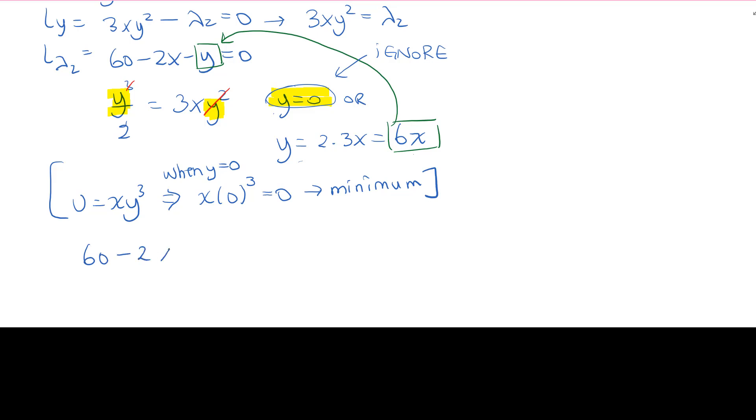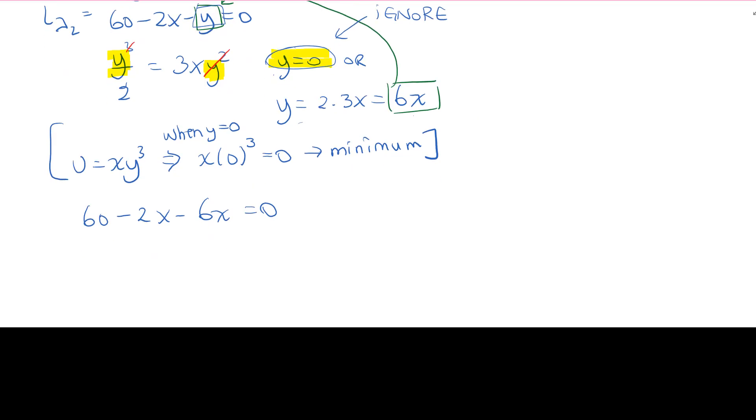Moving back on to solving our step number 2 problem. We are going to plug in the 6x for the y right here and solve for x. We get 60 equals to 8x now. Divide both sides by 8. And x is going to be 60 over 8, which is 7.5 equals to x.